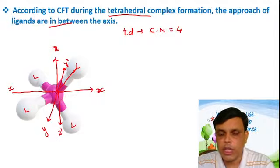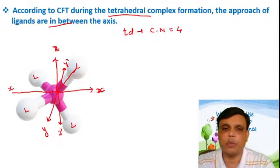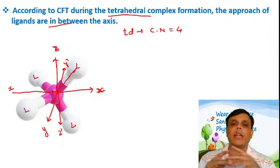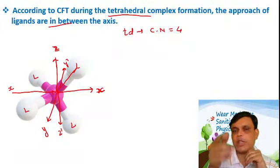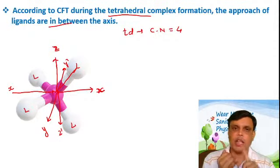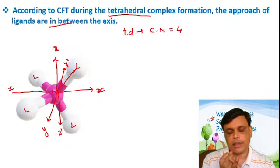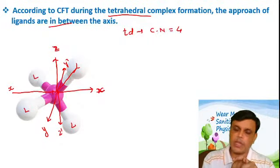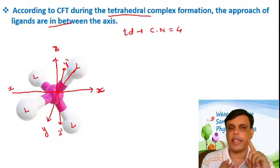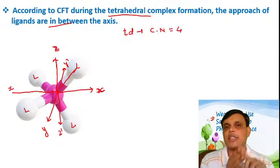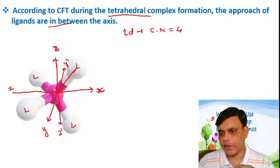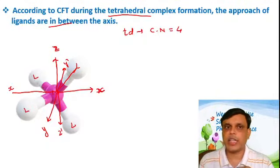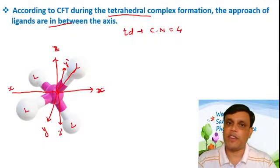Please write down and remember these two points; they will be helpful when we study the splitting of d orbitals. The splitting of d orbitals in octahedral, tetrahedral, and square planar complexes is different because of the different approaches of the ligands. The reason for different splitting patterns is the direction of ligand approach.